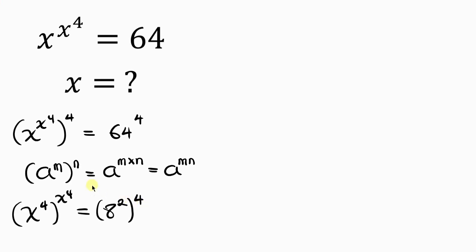Our next step will be for us to apply this same law of indices to the right hand side, which says powers multiply. So we have x to the 4th raised to the power of x to the 4th to be equal to 8. Now powers multiply, 2 times 4 is 8. Now notice that the base on the left is x to the 4th and is equal to the base on the right, 8.